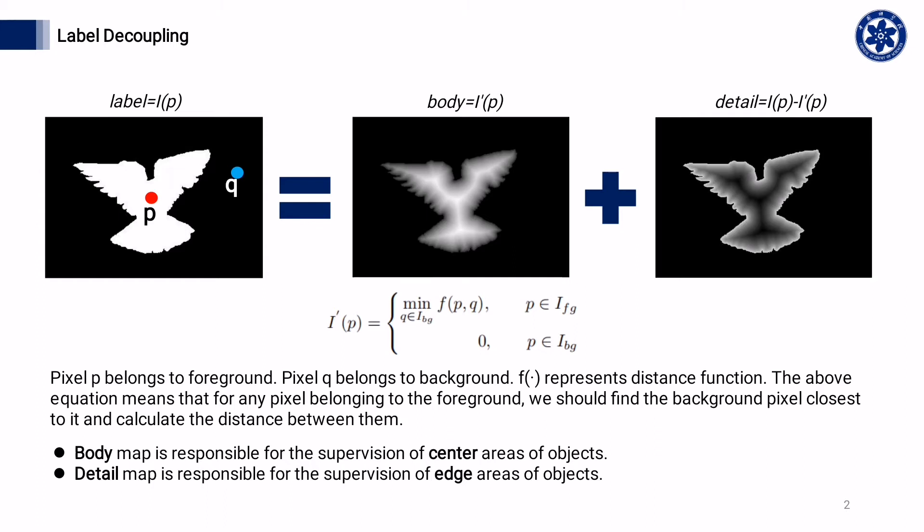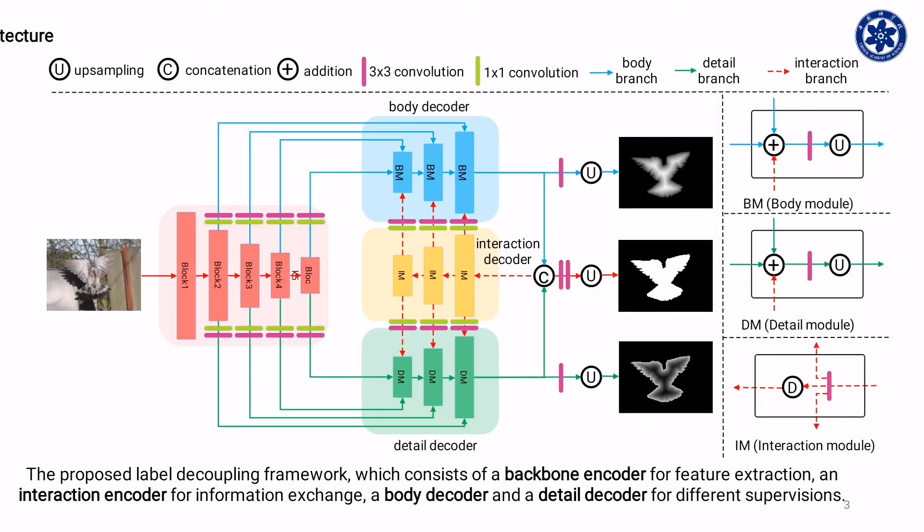Firstly, inspired by the distribution of prediction error, we propose to decompose the original label into body label and detail label. These two kinds of labels are responsible for center and edge areas of targets respectively.